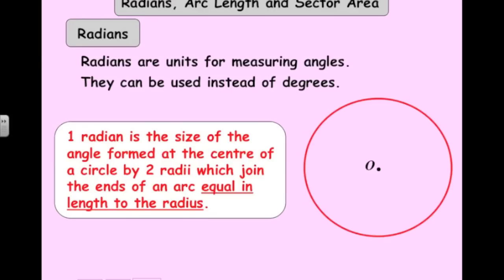Now that's a big, long definition. It's much easier to see it. So here if you've got a circle, if that length on the arc is the same as the length of the radius of the circle, that angle in the middle, x, is one radian. Okay, that's it.